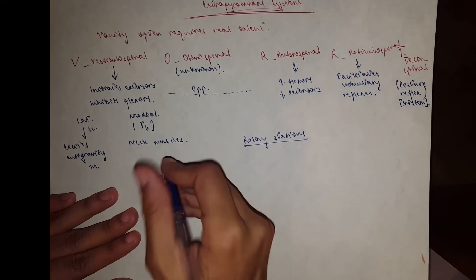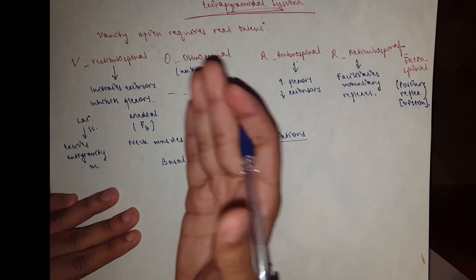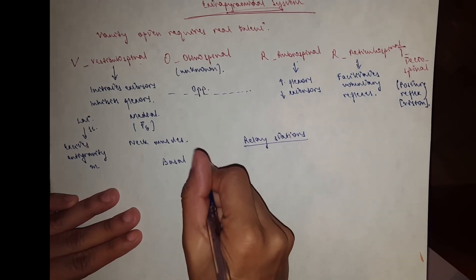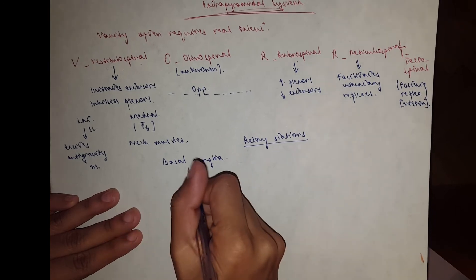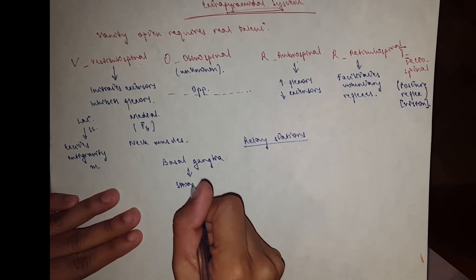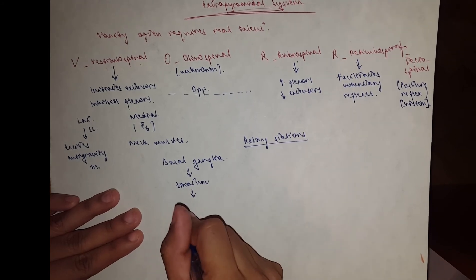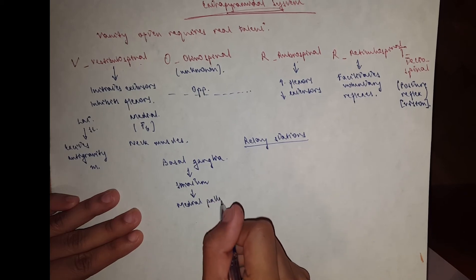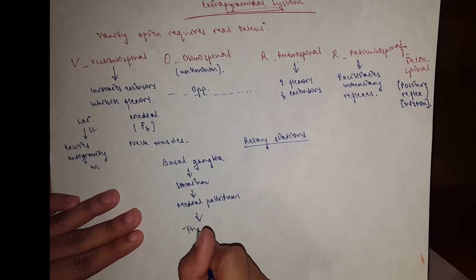The first relay station would be the basal ganglia. It follows a pathway, so it first starts from the striatum, then goes to the medial pallidum, then to the ventral anterior nucleus of the thalamus, and ends in the motor cortex.